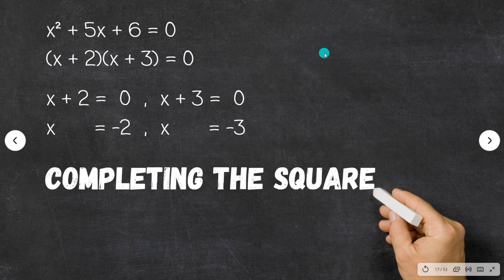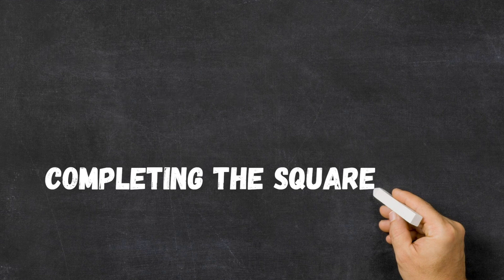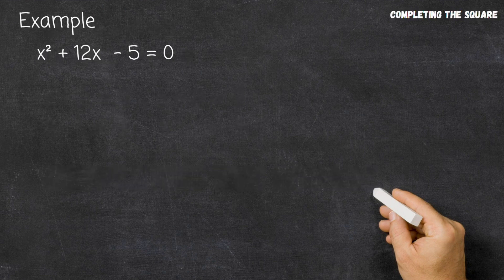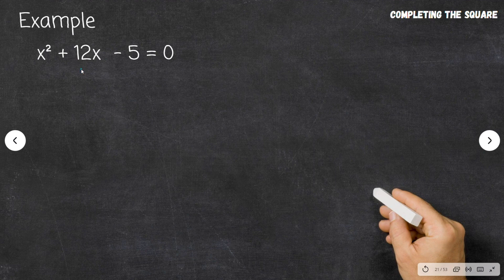However, we're not always going to have a situation in which these conditions are satisfied. That is, there will not always be factors of the constant term which sum to give the coefficient of the linear term. So let's take a look at another example: x squared plus 12x minus 5. We can quickly see that the factors of 5 are just 1 and 5, as 5 is a prime number. So 1 and 5 will not sum to give us plus 12. This is where completing the square comes in.